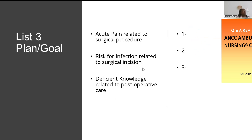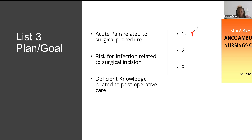The three nursing diagnoses are: acute pain, risk for infection, and deficient knowledge related to post-operative care. For goals: what would be your goal for someone with acute pain? No pain by discharge, or decreased level of pain to four or five out of ten. For risk for infection: the patient will have no signs and symptoms of infection. Make sure you're able to identify what the goal is.